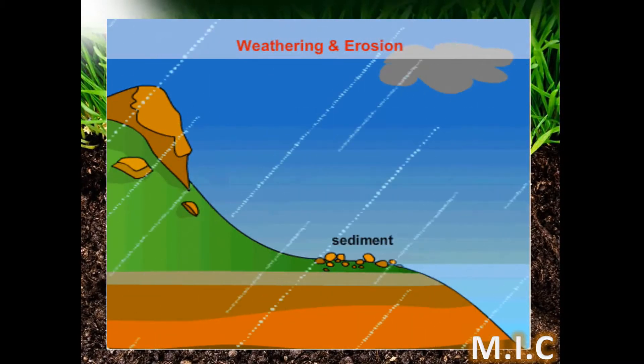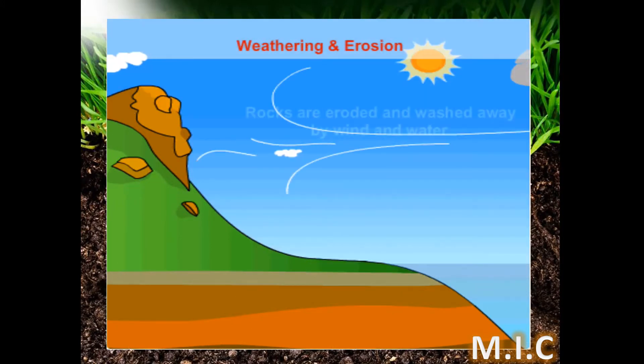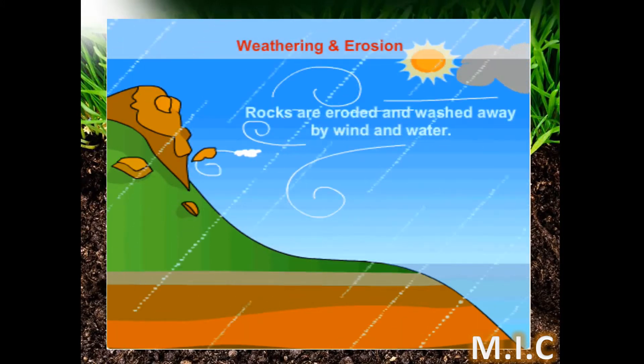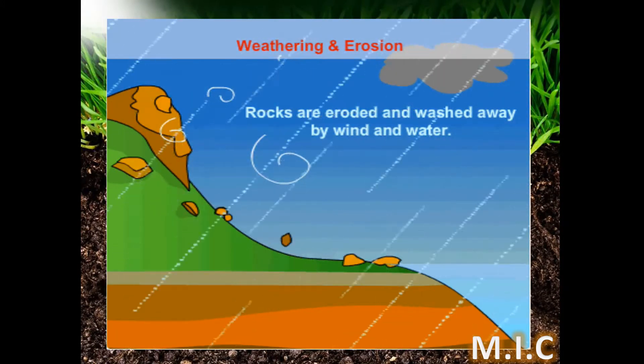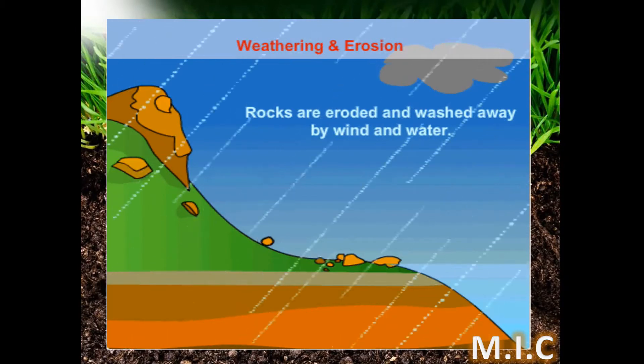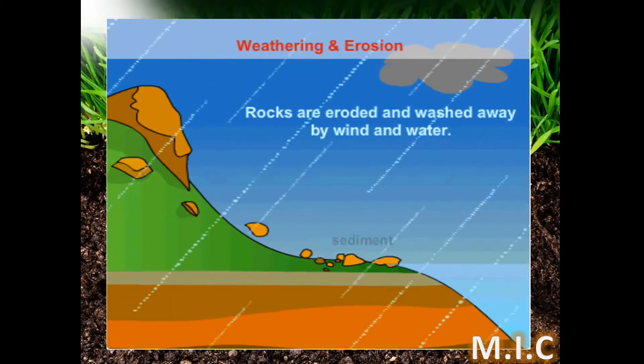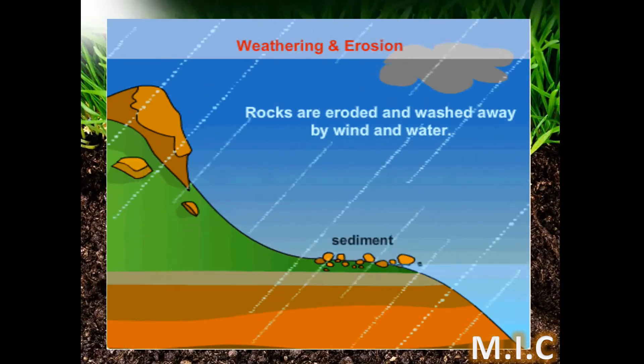The small broken pieces of rocks become very small when they are rubbed by wind and water. They become tiny particles and turn into soil.